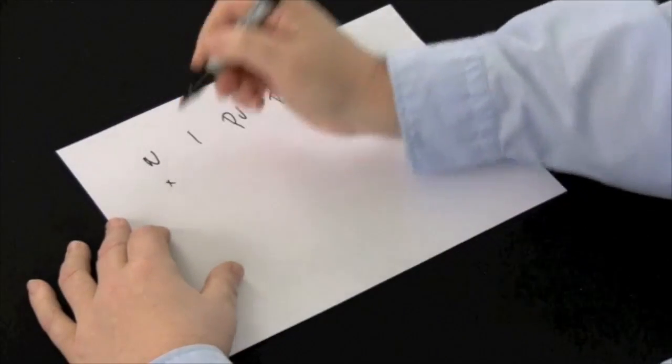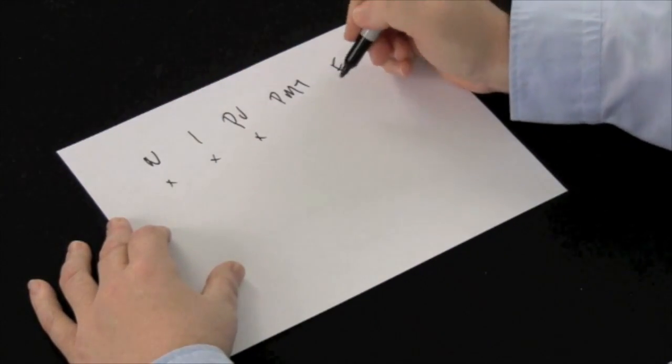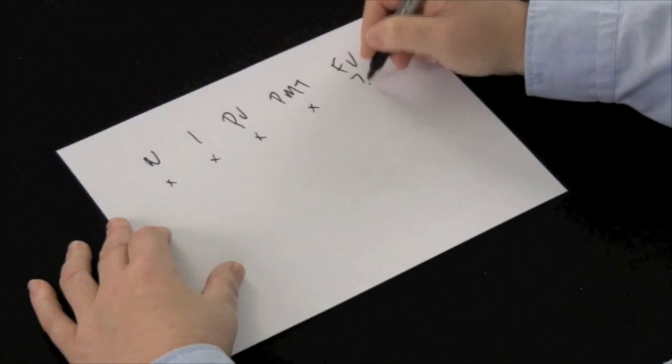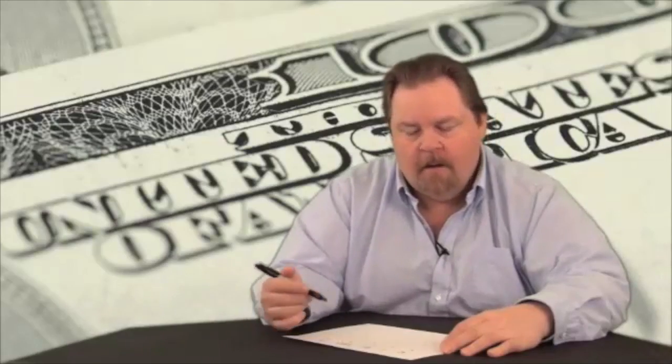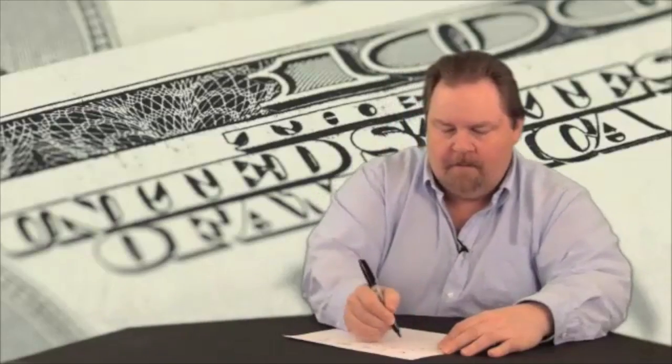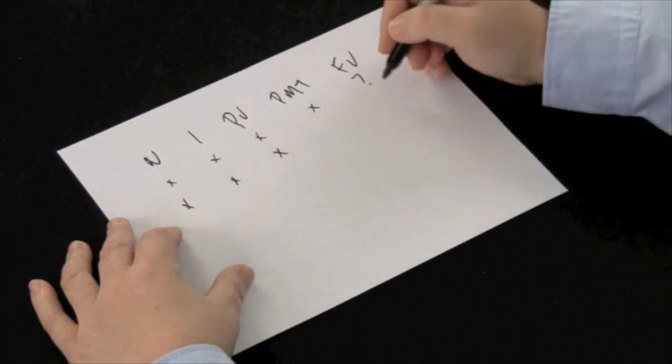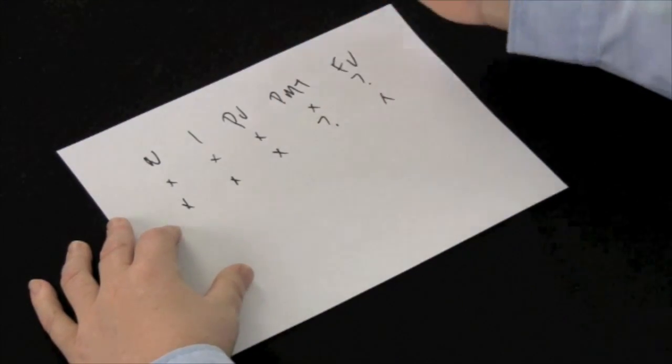If you know the number of payments, the interest rate, the present value, and the payment, you can obviously find the future value. But likewise, if you know the number of payments, the interest rate, the present value, and the future value, you can calculate a payment.